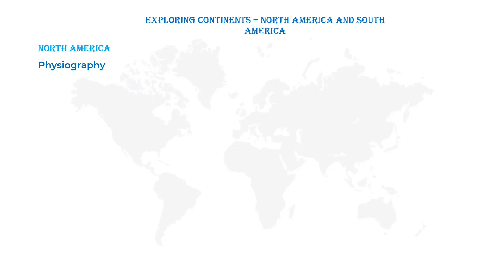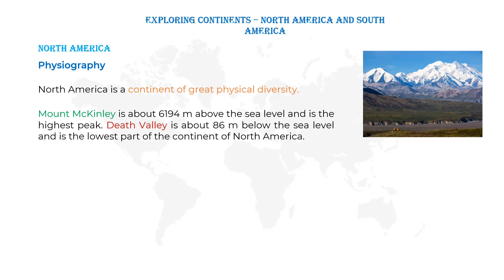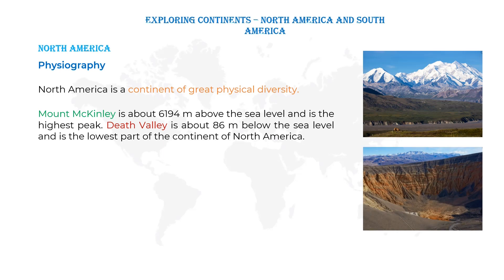Physiography means distinct types of landforms. North America is a continent of great physical diversity. North America has different kinds of landforms. Mount McKinley is about 6194 meters above sea level and is the highest peak. Death Valley is about 86 meters below sea level and is the lowest part of the continent of North America.